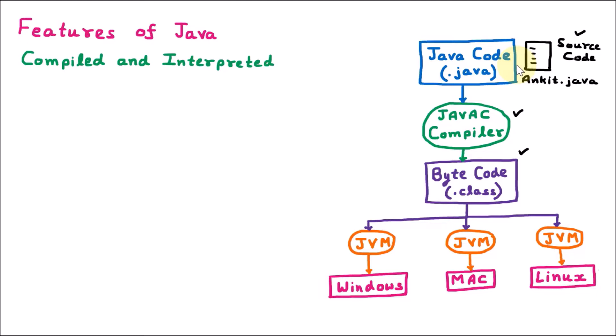So here, ankit.class file is created. This file nobody can read because it contains data which is not readable by the user or by the system — it is a very secured file. That's why it is called byte code. In this step, we are converting the source code into the byte code, that means the .java file into the .class file. So this is called the compiled or compilation phase.